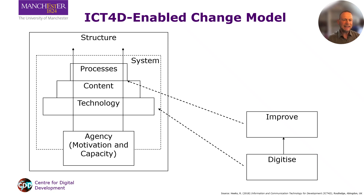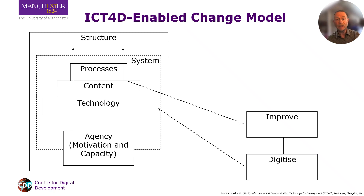Digital improvement is a rather vague notion, but it means incremental changes to system processes or to inputs such as data content. A well-known ICT4D example is the case study of use of mobile phones by fishermen in Kerala to collect price and other information from different markets while they were out at sea, and then land their catch at the market where they could make most profit. It wouldn't have been possible to physically visit all of those markets, so this is more than just digitisation.